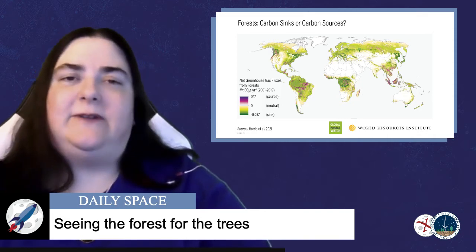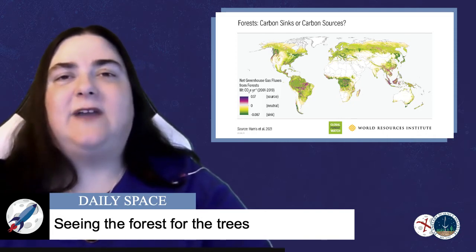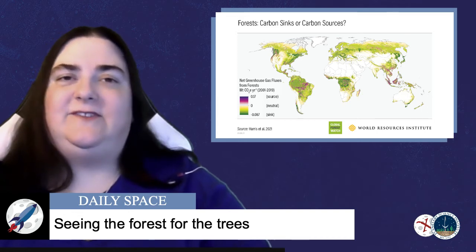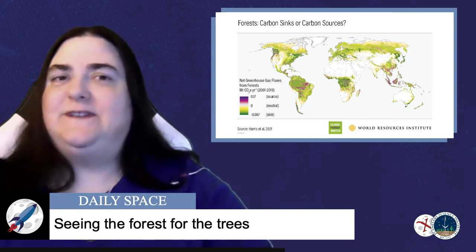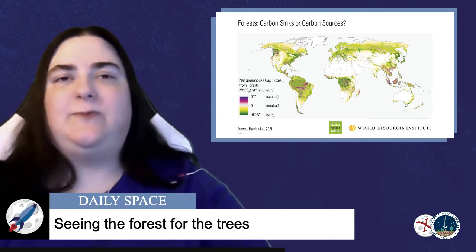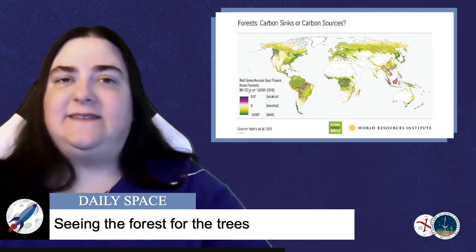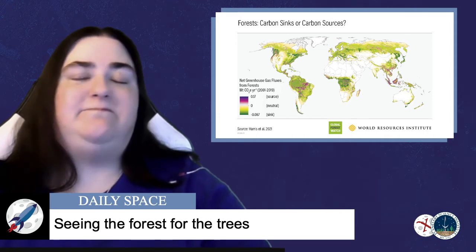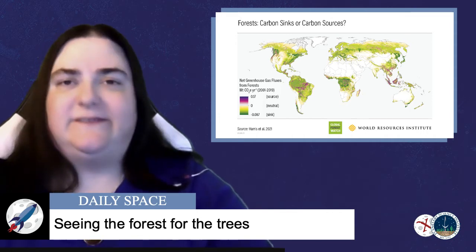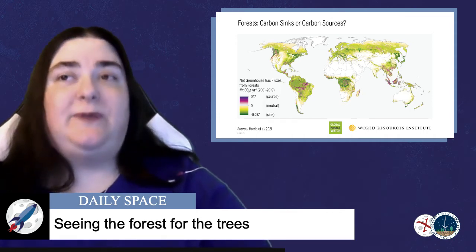Yes, there's a backronym in there. ICESAT stands for Ice, Cloud, and Land Elevation Satellite. Bring on that baby's award. From that data, the researchers could calculate how much carbon dioxide could be absorbed by the trees, and then they balanced that out with the amount of carbon dioxide released into the atmosphere from deforestation, fires, etc.